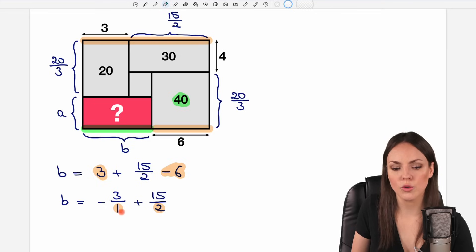In this case, 1 times 2 equals 2. 3 times 2 equals 6. And now the denominators are the same. And I am allowed to add these two fractions. The denominator will stay the same. And in the numerator, I have negative 6 plus 15. You can also switch these numbers if you want to, if it's easier for you to calculate this. So 15 minus 6 equals 9. So I know my B is of length 9 over 2.